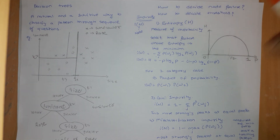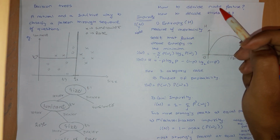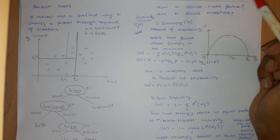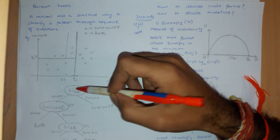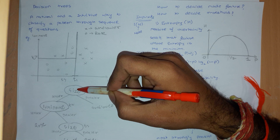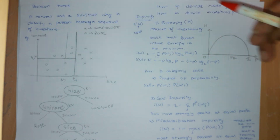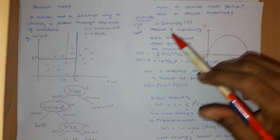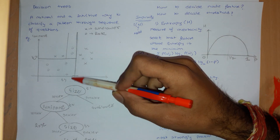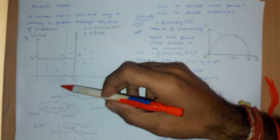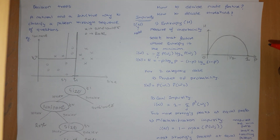How will I decide whether to take size or luminance first? That is the first question. The second question is how to decide the threshold — how do I know the values of T1, T2, T3? These two questions need to be answered.